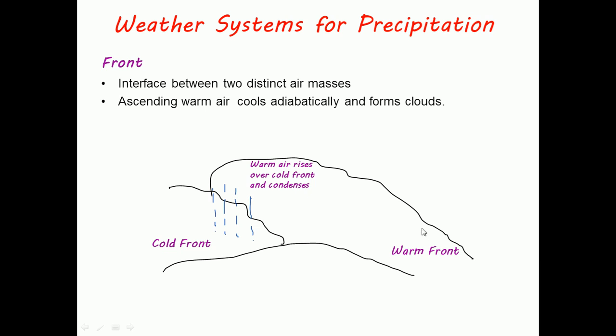The warm air rises from the warm front over the cold front because it is lesser in density. This warm air cools adiabatically and forms clouds, then condenses and forms precipitation.